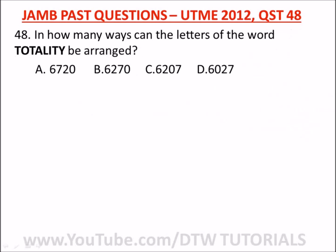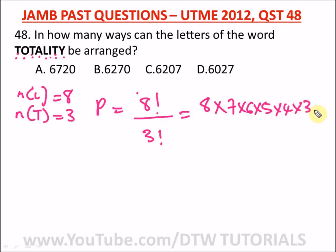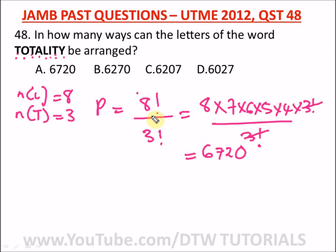Our next question asks: in how many ways can the letters of the word 'totality' be arranged? The total number of letters is eight. The letter T is repeated three times, so the formula is eight factorial over three factorial. Calculating: eight times seven times six times five times four gives us 6720. The correct option is option A.